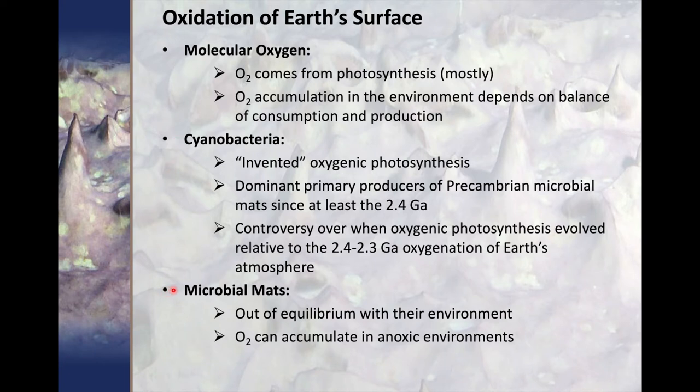The third background point is about microbial mats. I have a video on microbial mats that talks about how they change the geochemistry. Microbial mats, because of the metabolism going on by the bacteria, are out of equilibrium with their environment. What that means is if you have photosynthesis in the microbial mat, it can produce oxygen that will accumulate within the mat, even if the surrounding environment is anoxic and lacks that oxygen.